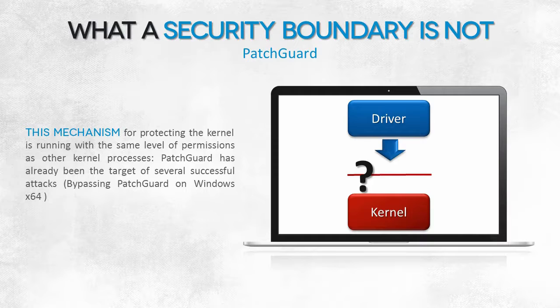The solution reports critical errors which are signaled by the characteristic STOP message. This provides a software developer with a clear sign that the program they are developing and testing uses an undocumented functionality and patches the kernel in a way that is not supported by the system manufacturer. These, in short, are the goals of PatchGuard.